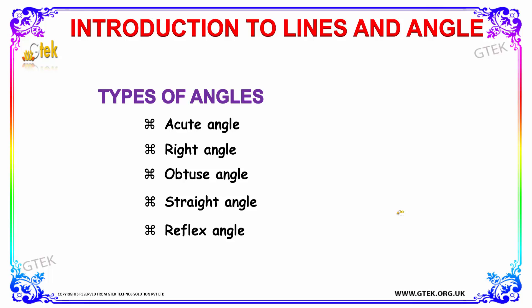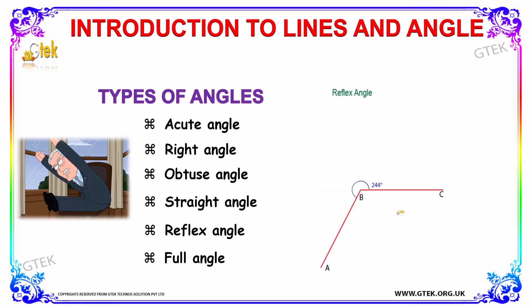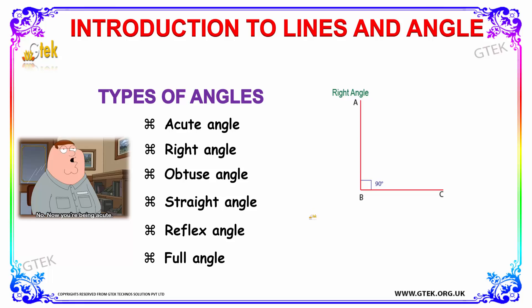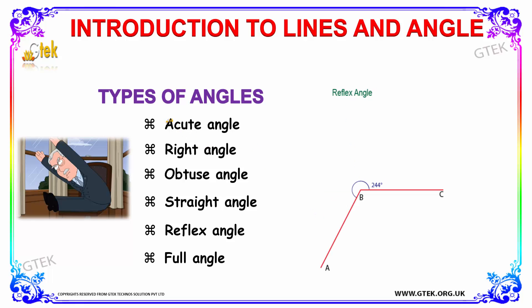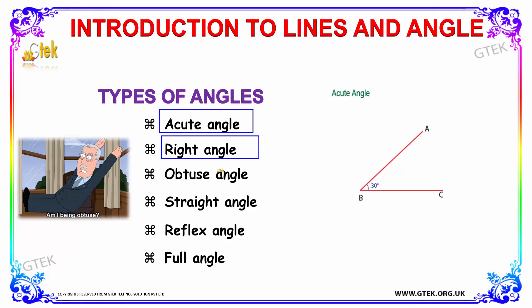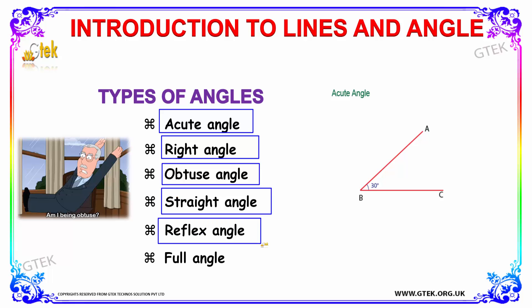Now let's discuss about types of angles. There are totally six types: acute angle, right angle, obtuse angle, straight angle, reflex angle, and full angle.